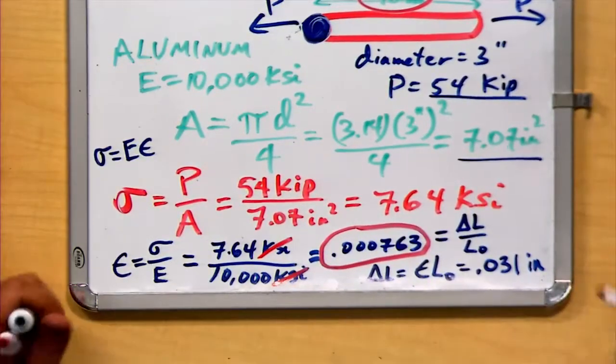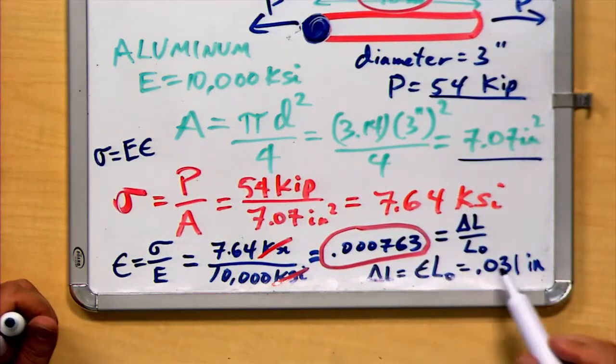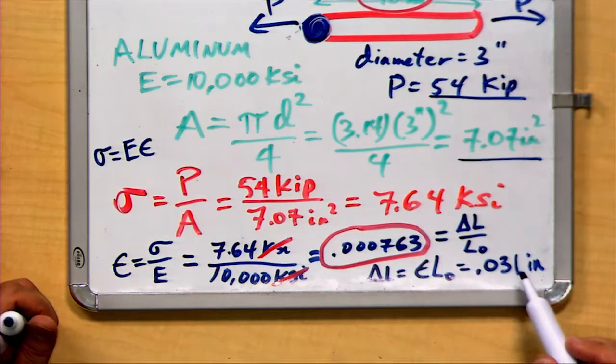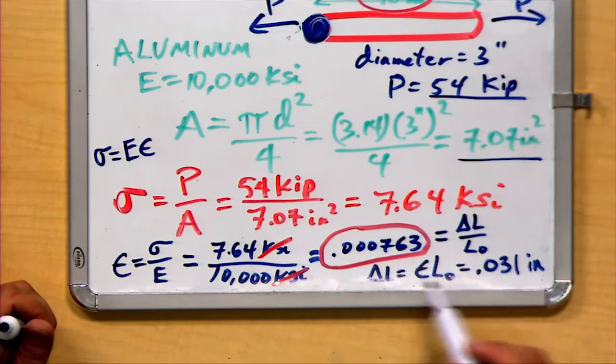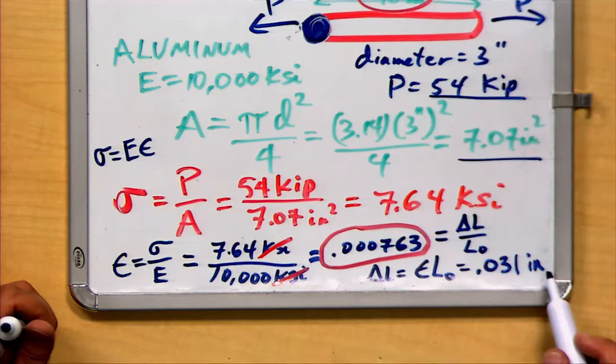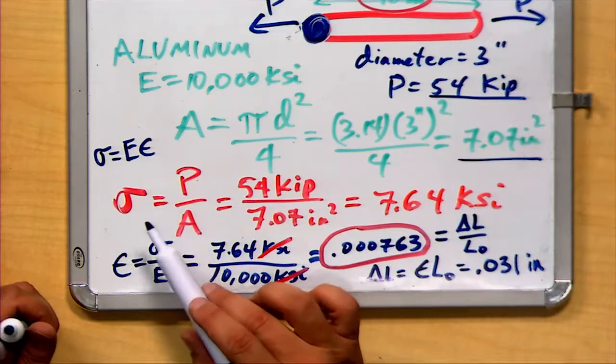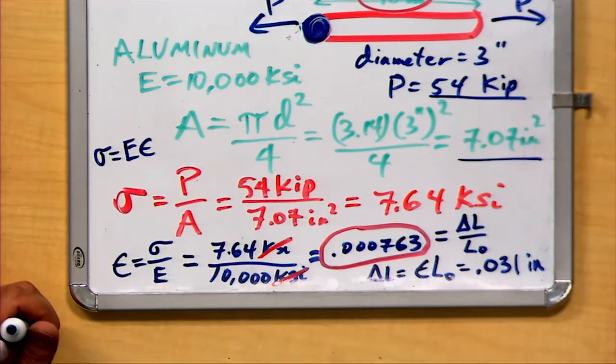So notice this very, very small amount of deformation is one of the reasons why we assume that there is very little or no deformation when we initially calculate our stresses in something like a truss.